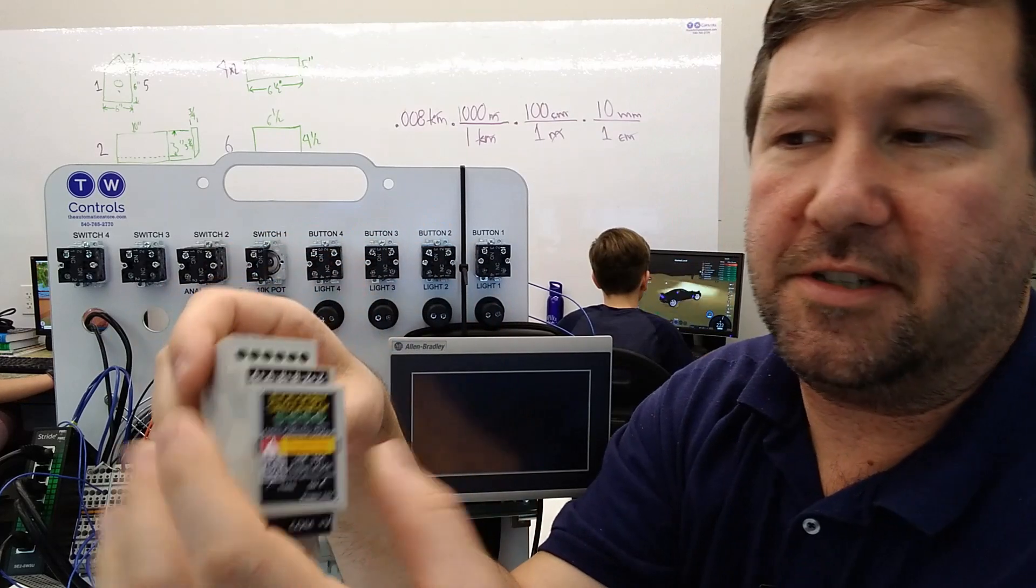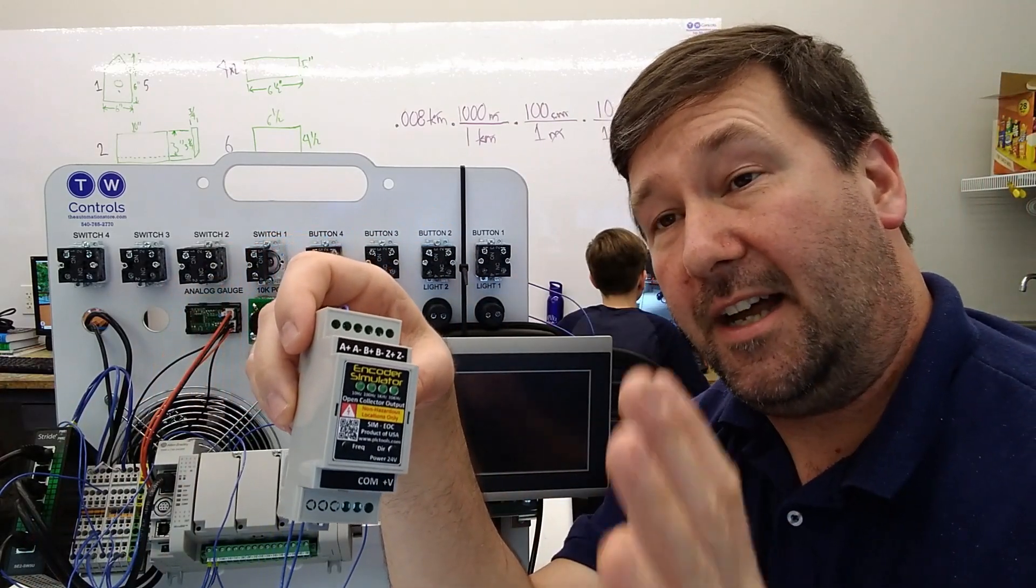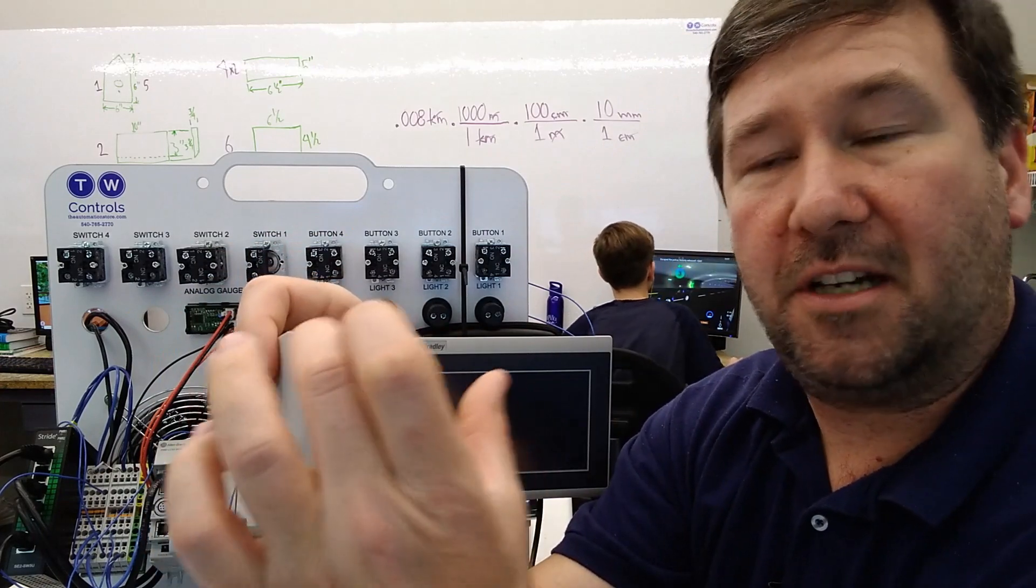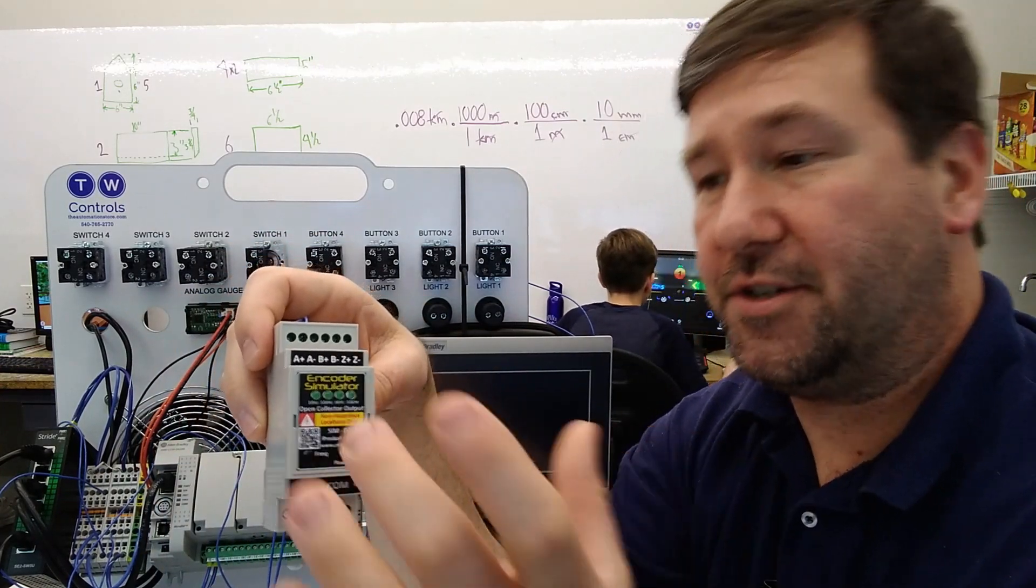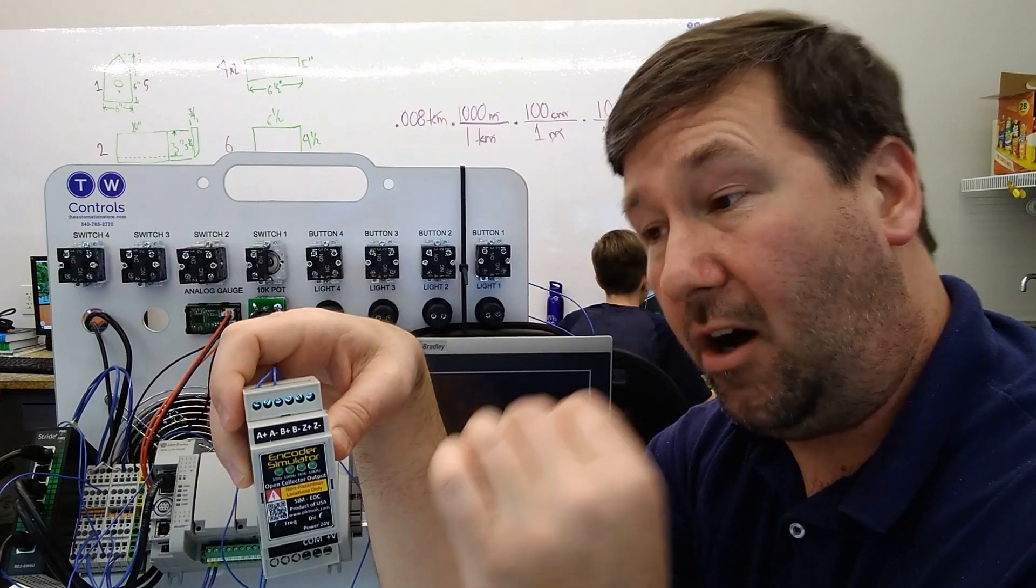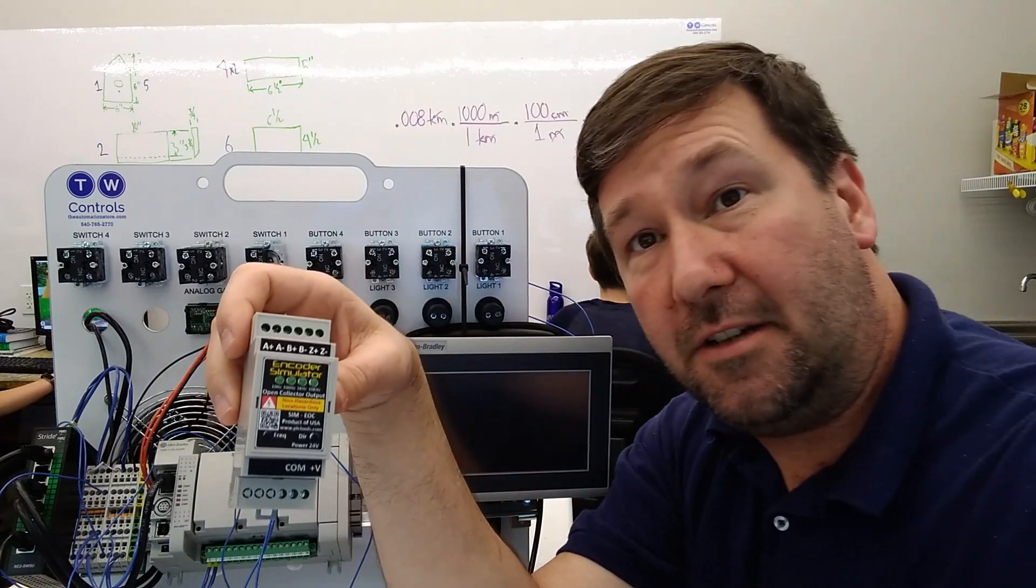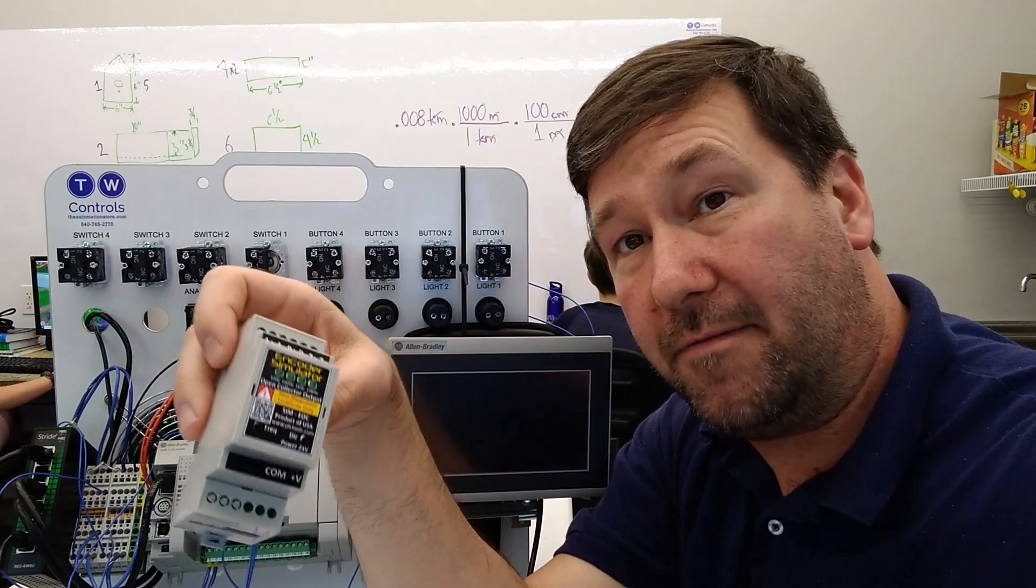Now this is a little confusing because you see the plus and minus, and you think you have to make it a circuit, but it's not. What it is, is these are always going to be opposite, and it's a checking feature. When A plus is on, A minus is going to be off. And when A plus is off, A minus is going to be on. So you only need to use the plus when you're connecting to the micro 850.